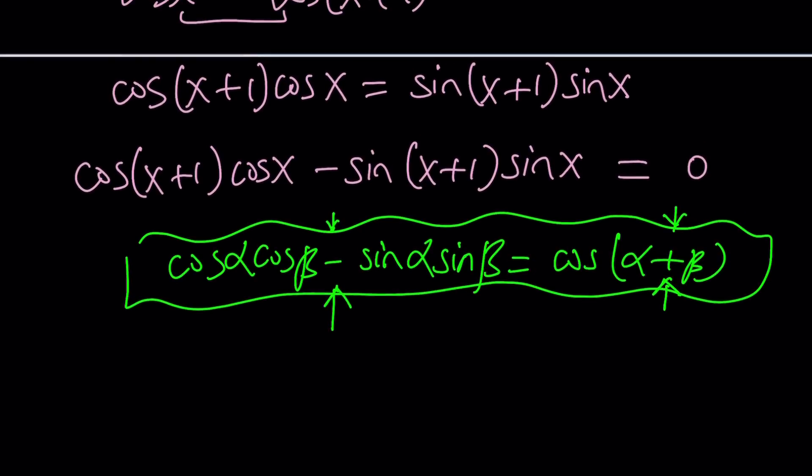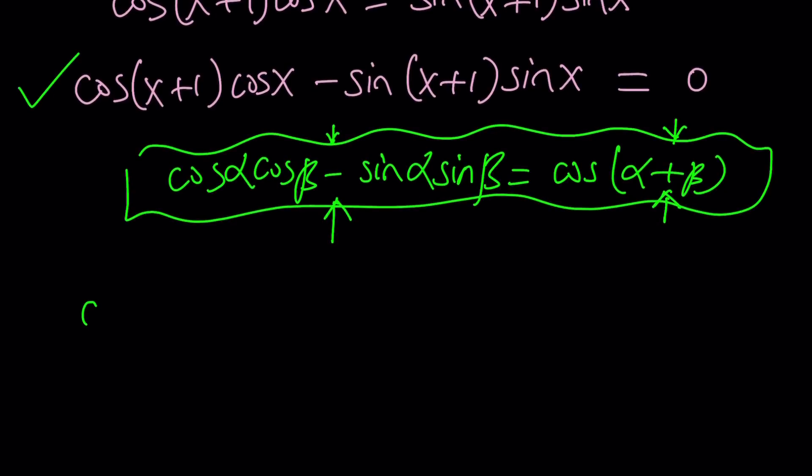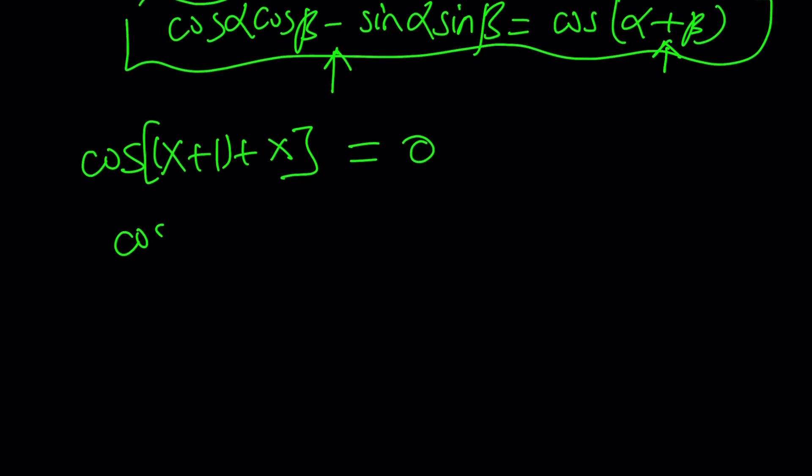Now, if you apply it here, then you should be getting something like this. It's cosine of x plus 1 plus x. So, we're adding these two things. And, of course, that's a single cosine. And it's equal to 0. That's the best part. Now, this means cosine of 2x plus 1, we're adding like terms, is equal to 0.